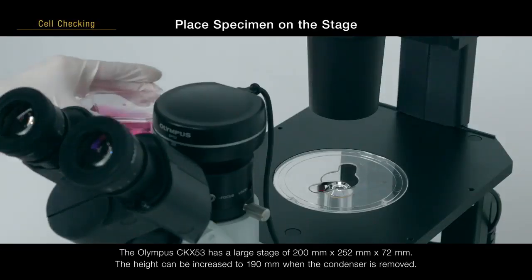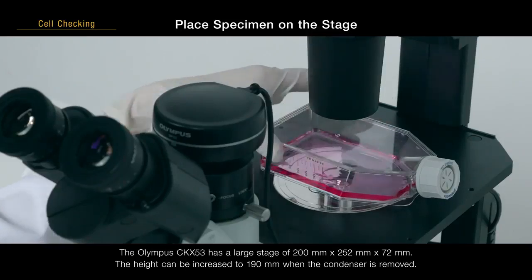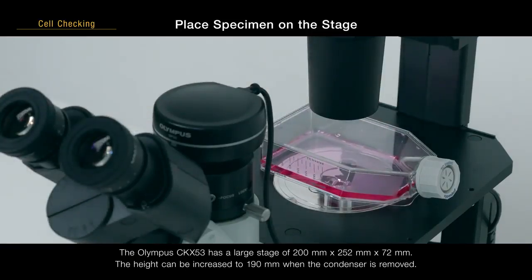The Olympus CKX-53 has a large stage of 200 mm by 252 mm by 72 mm. The height can be increased to 190 mm when the condenser is removed.